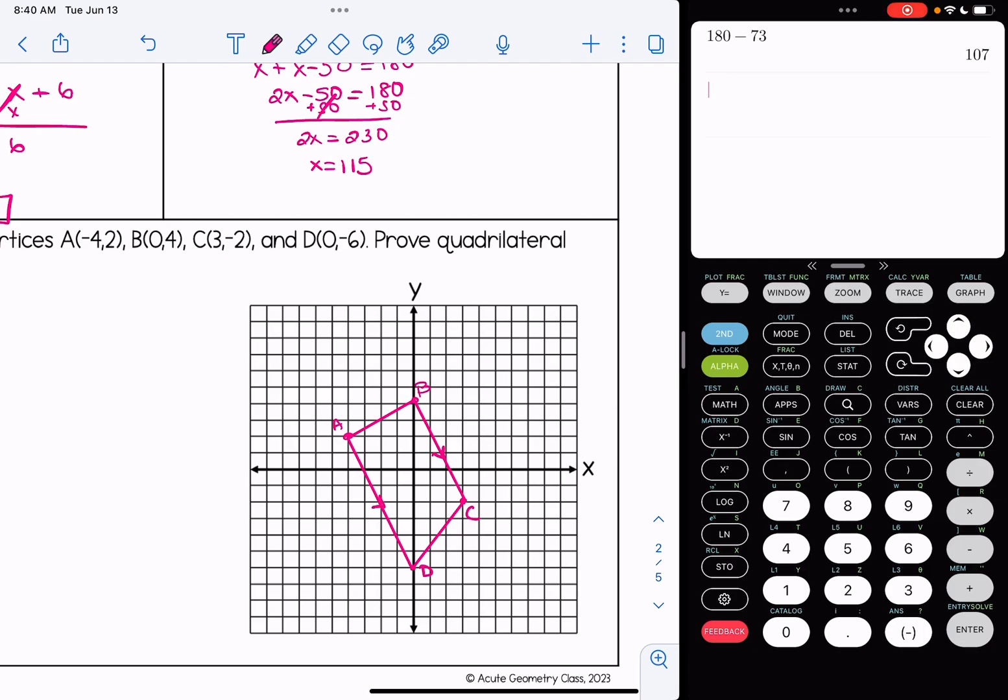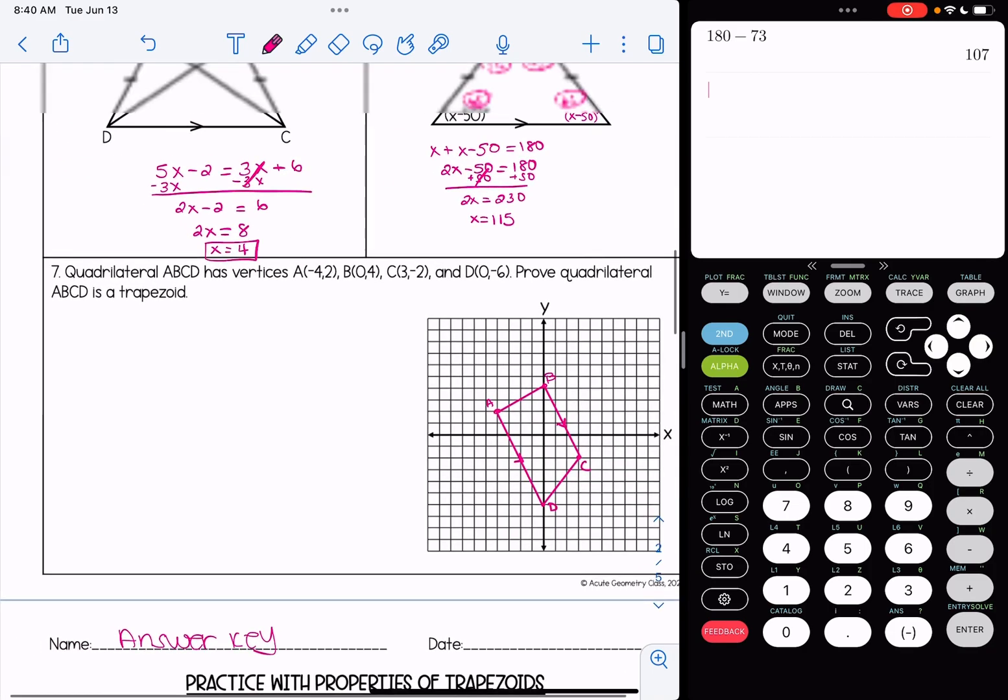Okay, we're going to just verify that we can't just say that they look parallel. We have to actually do some sort of mathematical calculation in order to back that up. So I'm going to do the slope formula for both of those sides. If you remember the initial definition of a trapezoid, it's a quadrilateral where at least one pair of opposite sides are parallel.